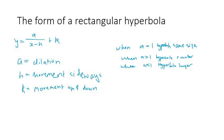The form of a rectangular hyperbola is y = a/(x − h) + k, where a is our dilation, h is our movement sideways, and k is our movement up and down. With dilation: when a equals one the hyperbola stays the same size, when a is greater than one the hyperbola gets smaller, and when a is less than one the hyperbola gets larger.